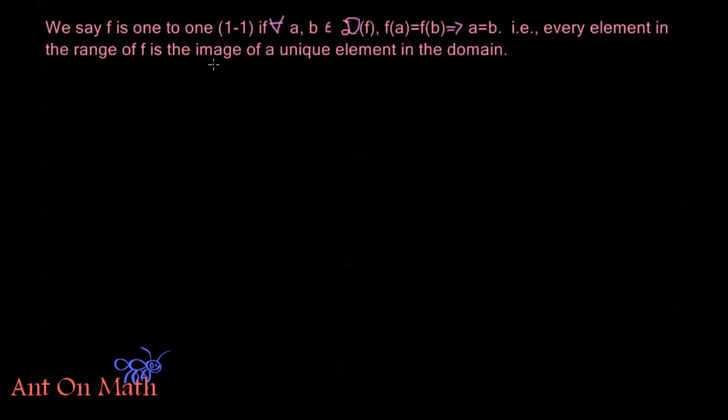So I wouldn't have something like f(1) equals 1 and f(2) equals 1. While that would still be a function, that would not be a one-to-one function, because I would have two images that are the same, but the elements in the domain that are creating those images are different. So that's what a one-to-one function is.